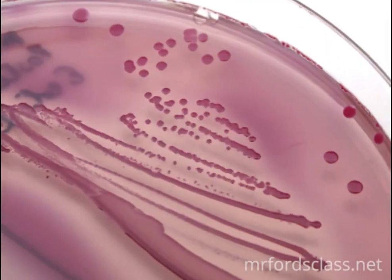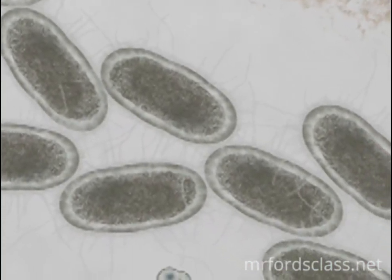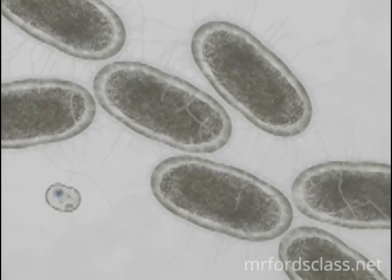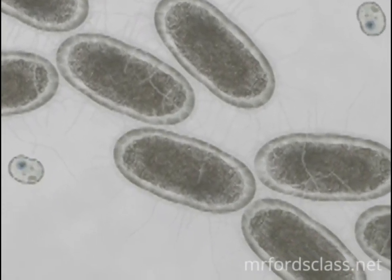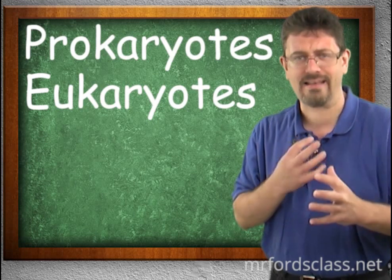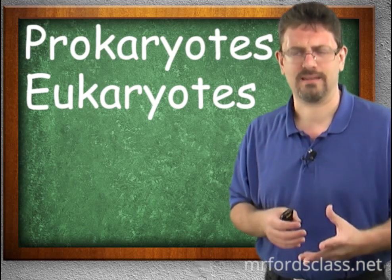For example, E. coli — lots of strains of E. coli are relatively harmless. You have E. coli in your body. But then we hear about those E. colis that wind up killing people with food poisoning. They have adapted. They have adopted some sort of virulence, some sort of nasty part that makes them more deadly.